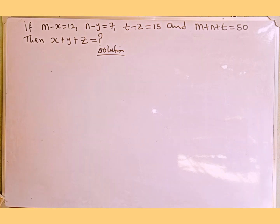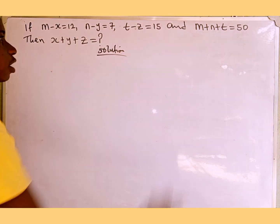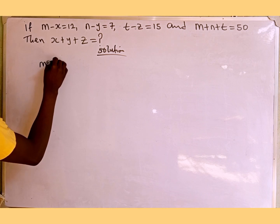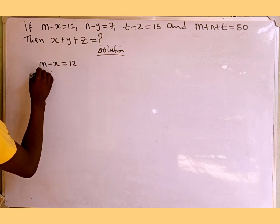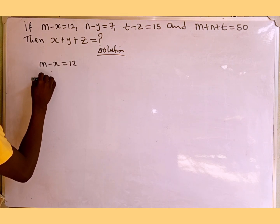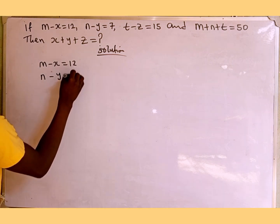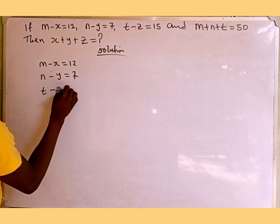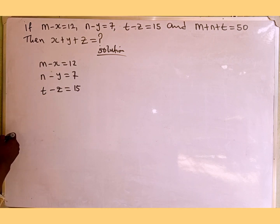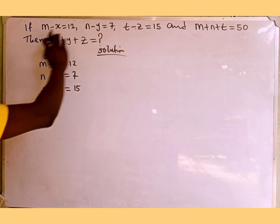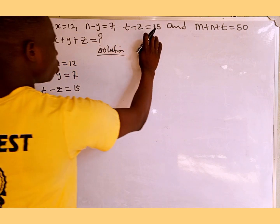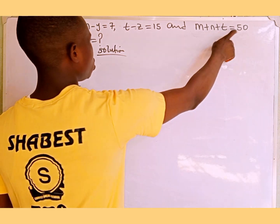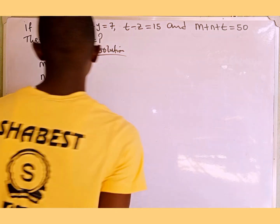The first thing we are going to do is rewrite the given equations. The first one is m minus x equals 12, then n minus y equals 7, and t minus z equals 15. These are the given equations. And from the question, m plus n plus t equals 50, and we're looking for the value of x plus y plus z.